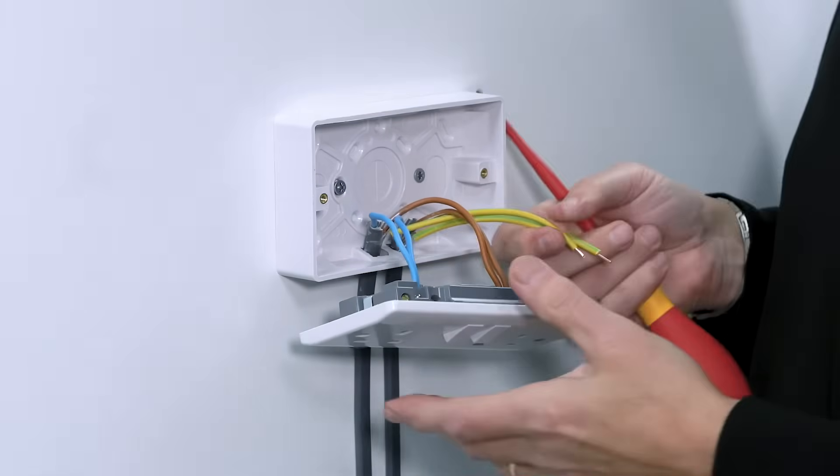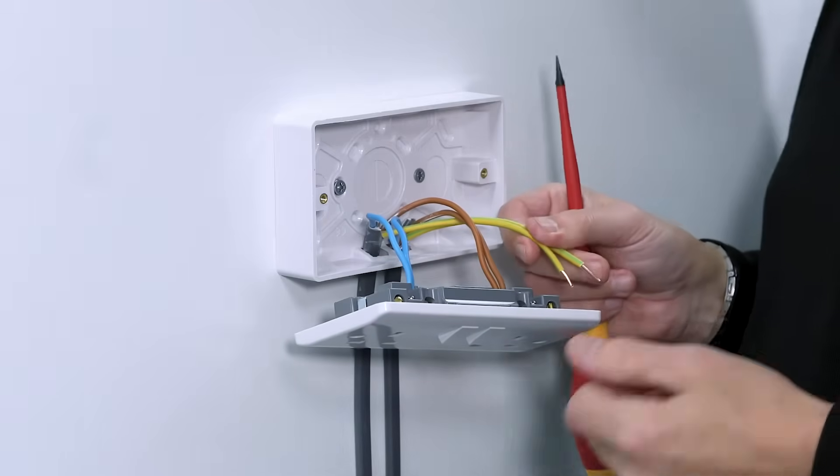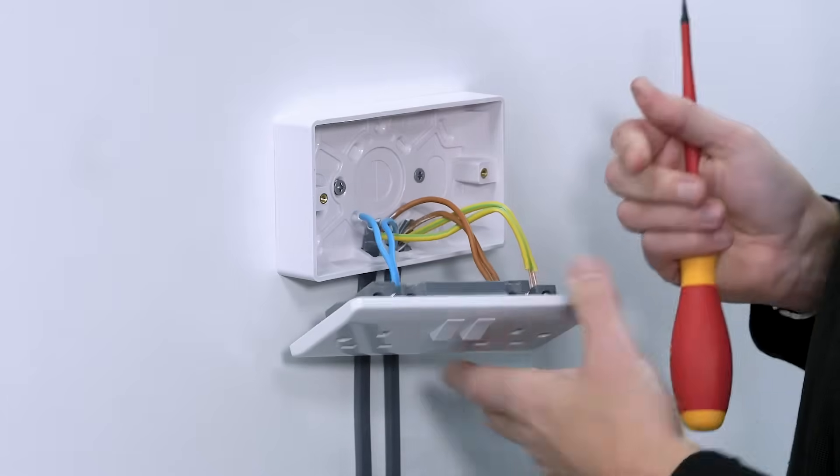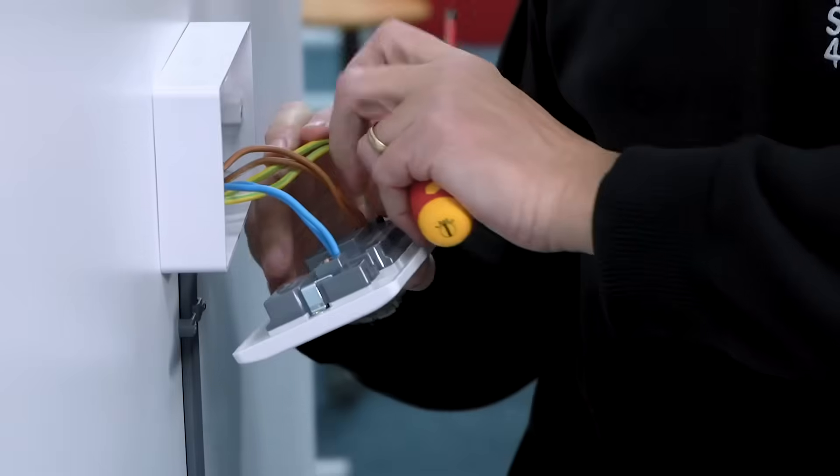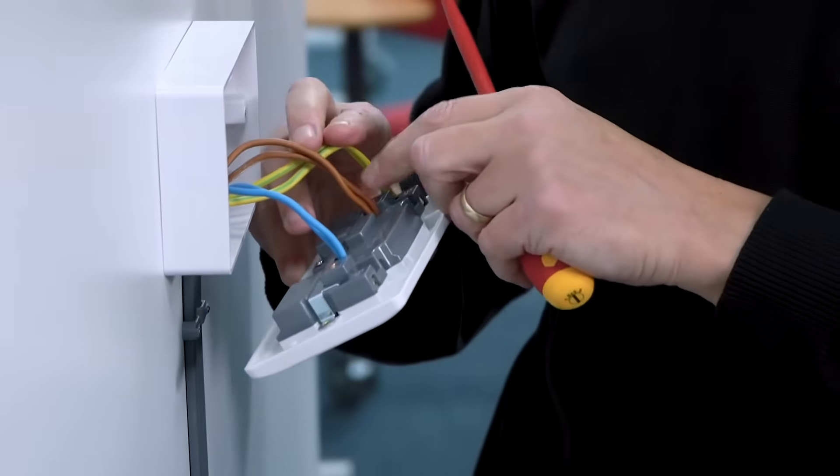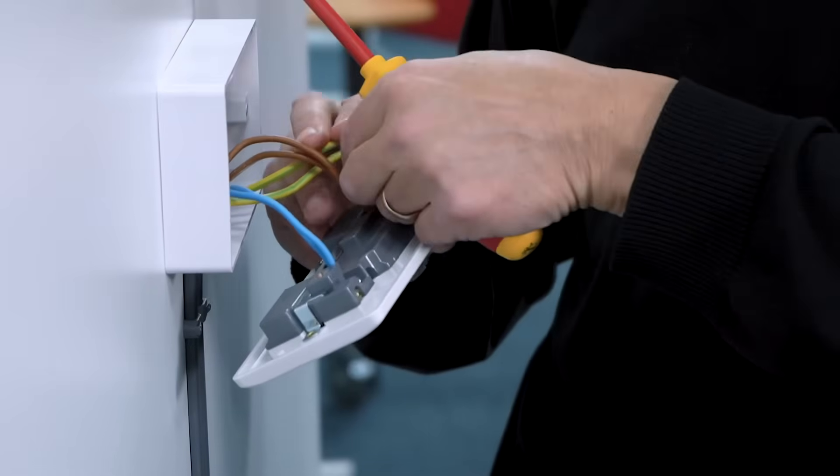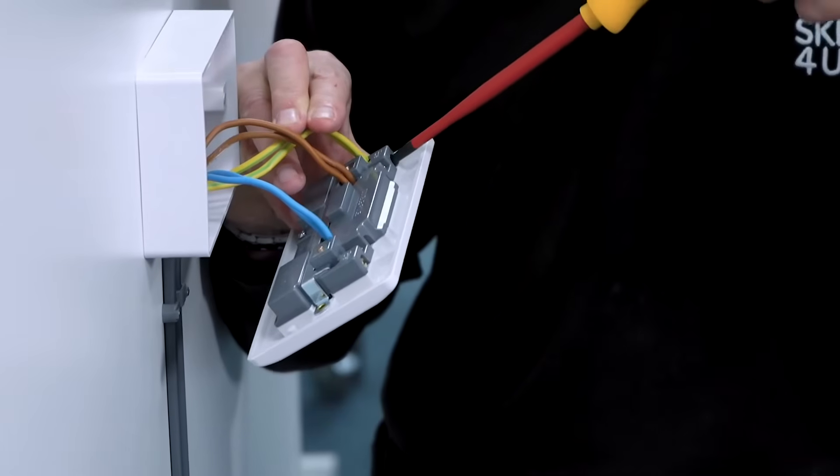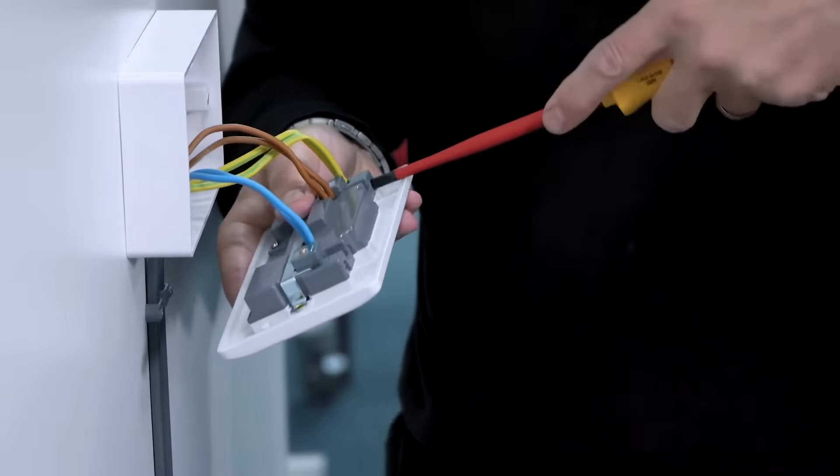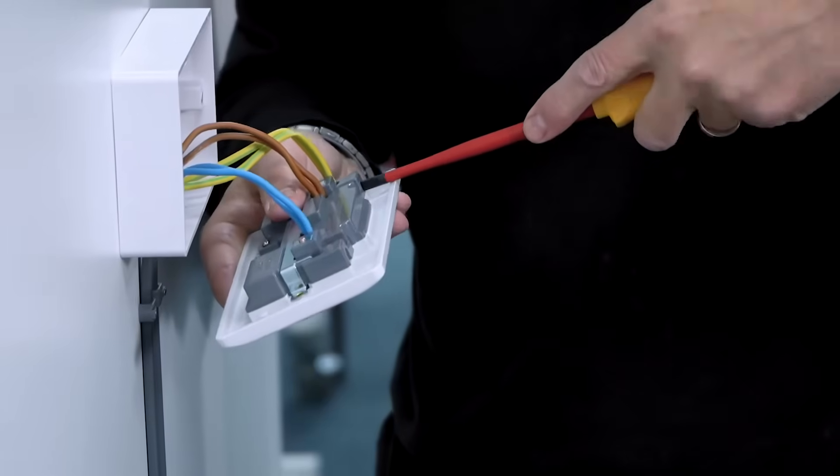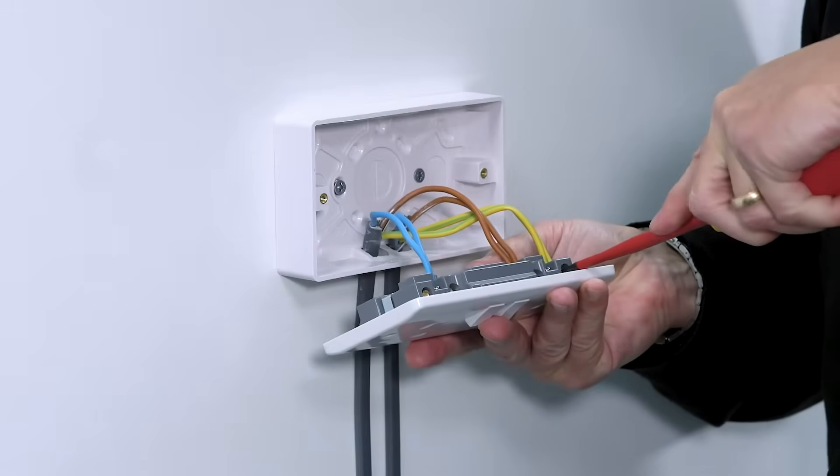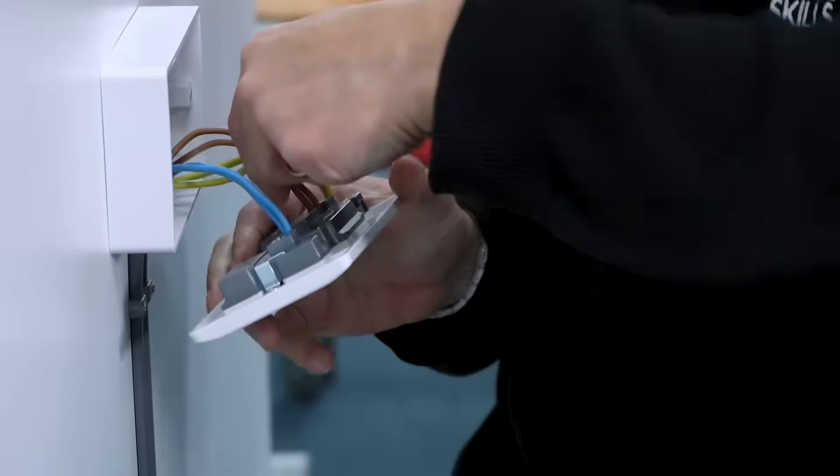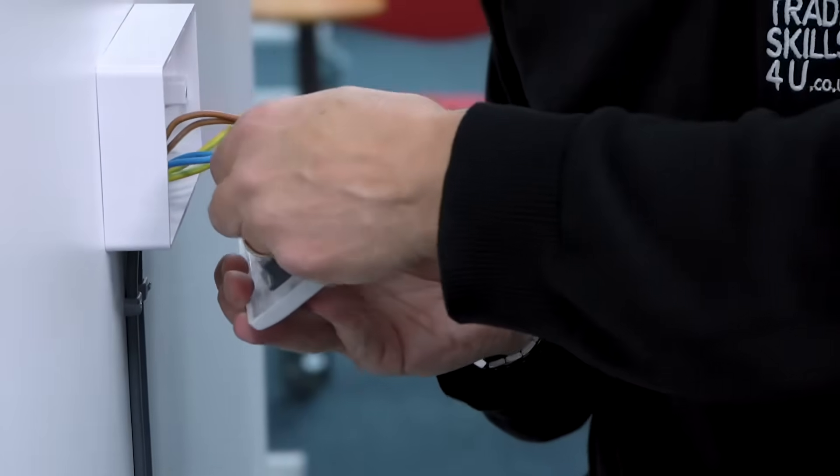I've got two terminals where I could terminate the CPCs. For this example, I'm putting them both into the one terminal, which is fine. This is a topic for another video, but you can put them both in the same one. Or, if you wanted to double the ends over on each one, you could use both of the terminals. Some sockets don't give the option; some have two, some only have one. Nice and tight. Always, when you're doing a screw connection, pull back on the conductors to make sure they're not going to come out, that they're nice and tight.